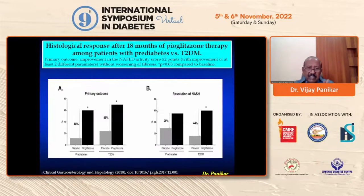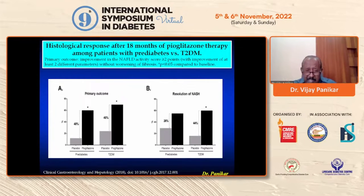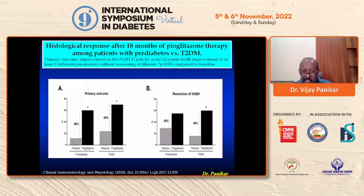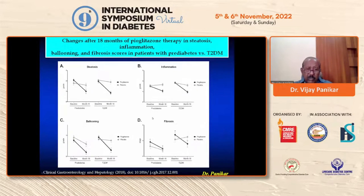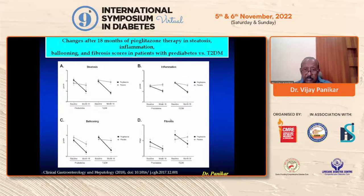Histological responses in patients with prediabetes versus type 2 diabetes show that pioglitazone has done wonders in prediabetes, and does the same in type 2 diabetes — resolution of NASH, improvement in NAFLD activity score, ballooning, and fibrosis. Steatosis in both prediabetes and diabetes comes down; ballooning, inflammation, and fibrosis all improved.